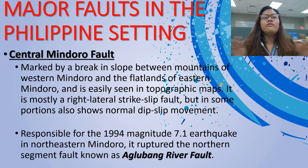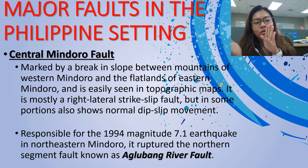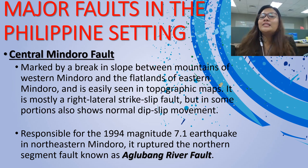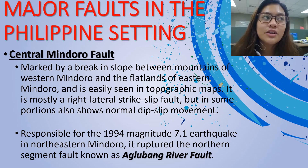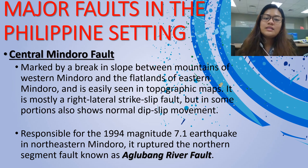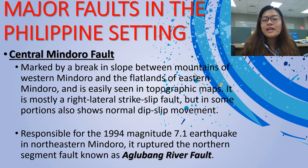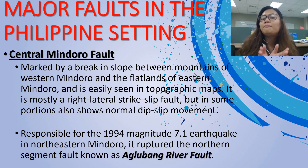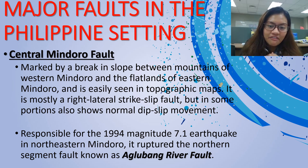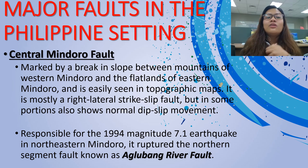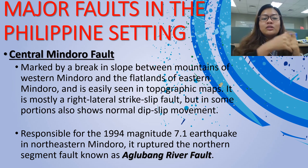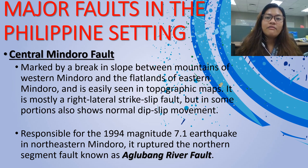Major fault systems in the Philippines also include the Central Mindoro Fault, marked by a break in slope between the mountains of western Mindoro, easily seen in topographic maps. It is mostly a right-lateral strike-slip fault, but in some portions also shows normal dip-slip movement. It was responsible for the 1994 magnitude 7.1 earthquake in northeastern Mindoro, which ruptured the northern segment of the fault known as the Aglubang River Fault.